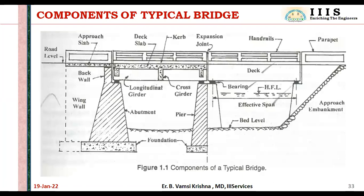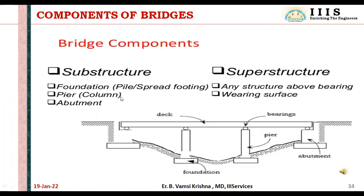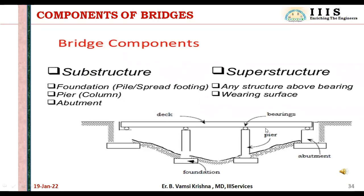Bridges have a substructure and a superstructure. The substructure includes foundations, piers, and abutments. The superstructure is everything above the bearing. You can see the bearing position — above the bearing position is the superstructure, and below the bearings everything comes under the substructure.